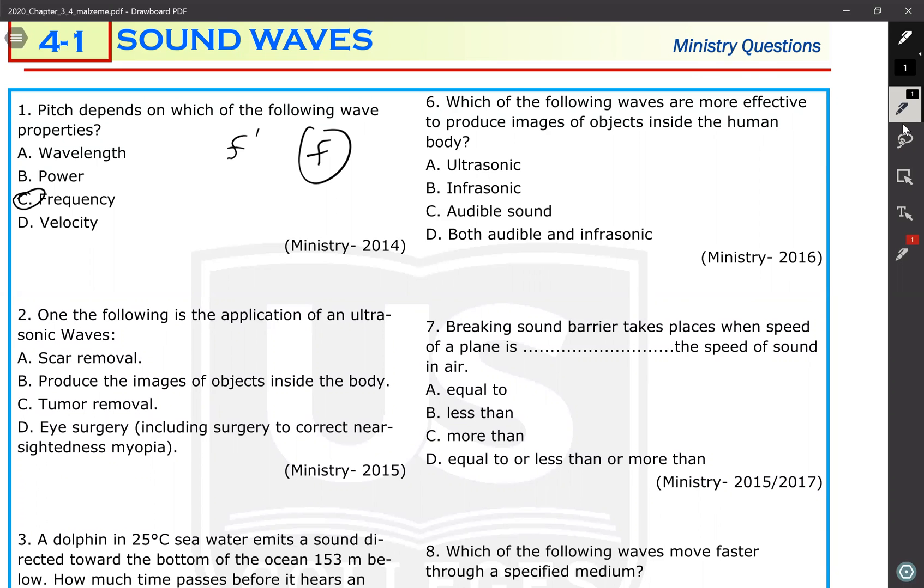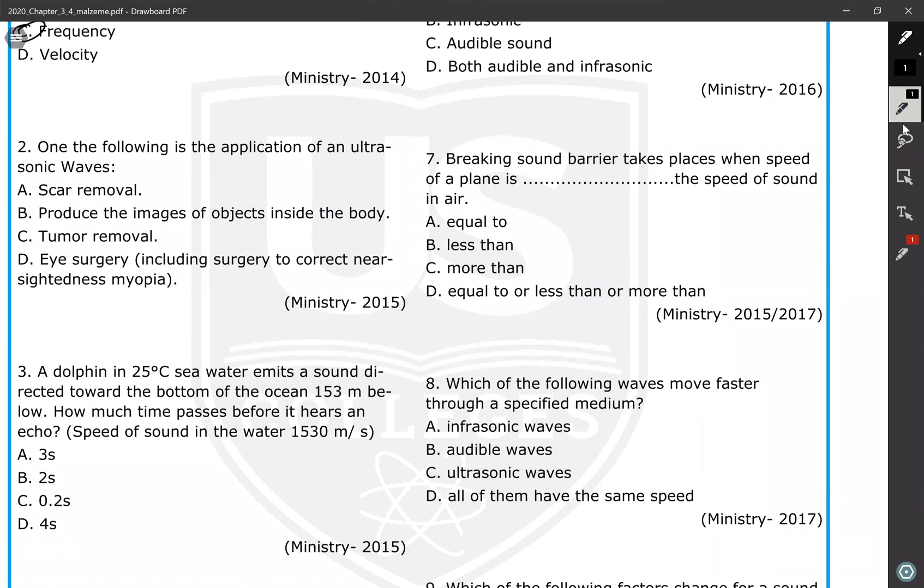Second one: one of the following is the application of ultrasonic waves. Remember, ultrasonic waves are used to take the picture of the human body, inside your body. So 'produces the image of objects inside the body' is the correct answer. The other three are about other things, especially we will learn in Chapter 7 about the lasers. But B, produces an image of objects inside the human body - we are using the ultrasonic sound waves.